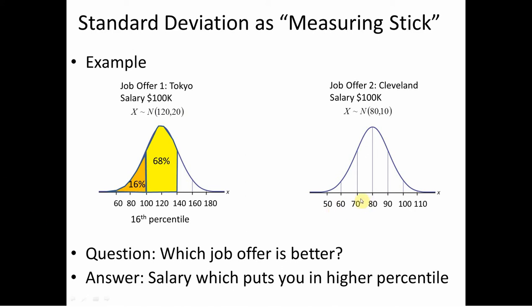What about Cleveland? $100,000 is two standard deviations from the mean of 80, since the standard deviation is 10. The empirical rule tells us 95% of the population is within two standard deviations, so the two tails together are 5%. Due to symmetry, each tail is 2.5%, so $100,000 in Cleveland sits at the 97.5th percentile. Clearly, the Cleveland job offer based purely on monetary considerations is the best choice.